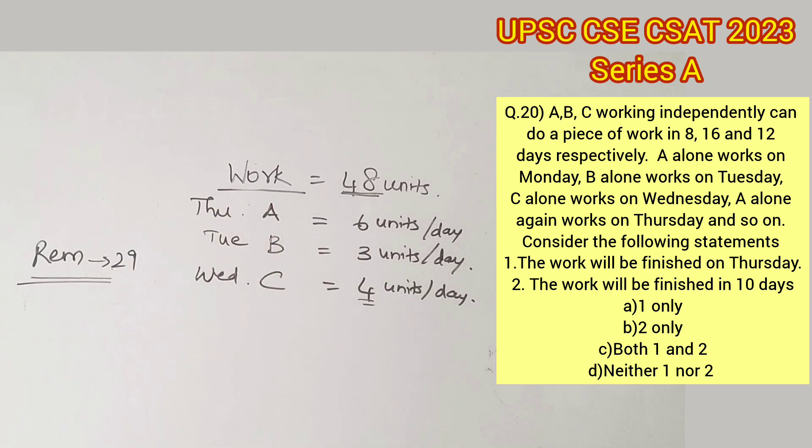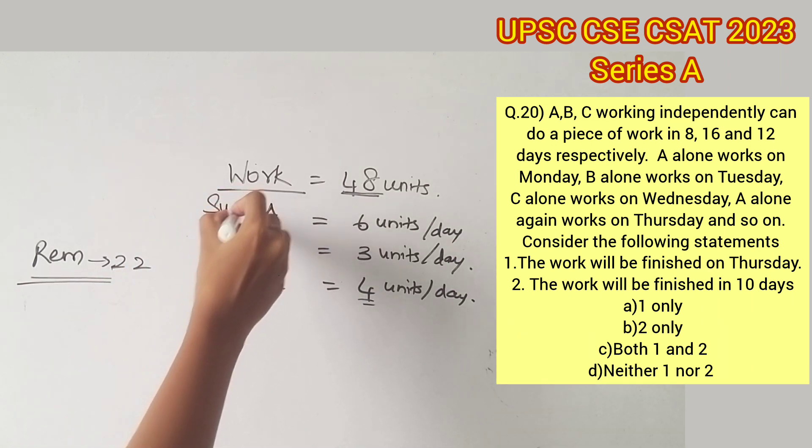On Friday, B would complete the next 3 units. On Saturday, C would complete the next 4 units. On Sunday, A would complete the next 6 units.